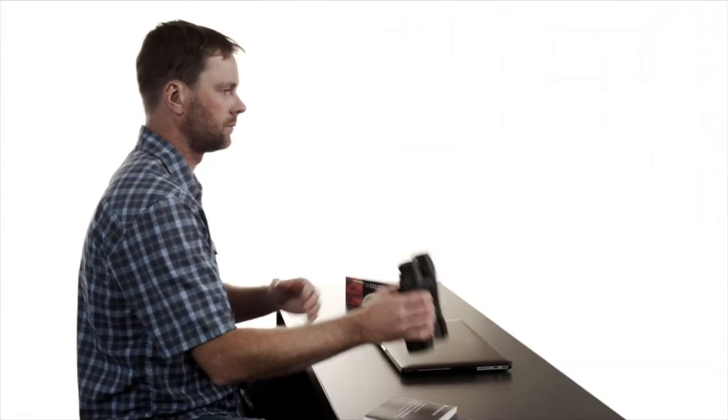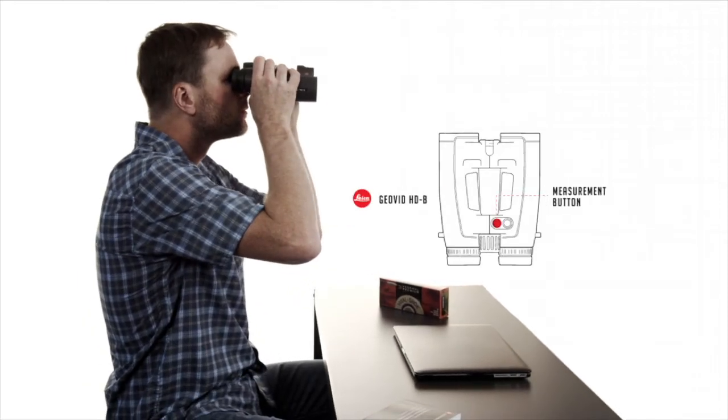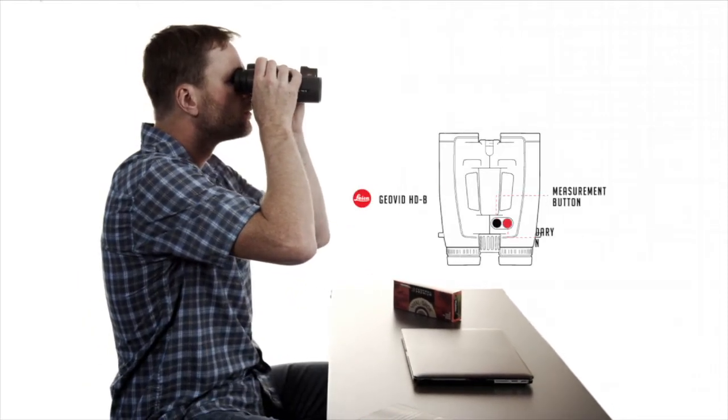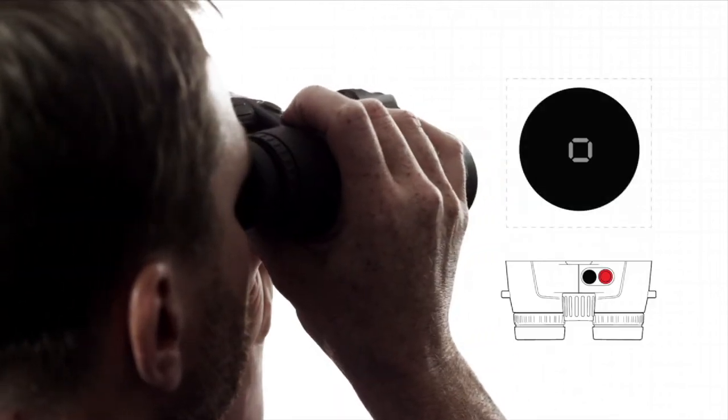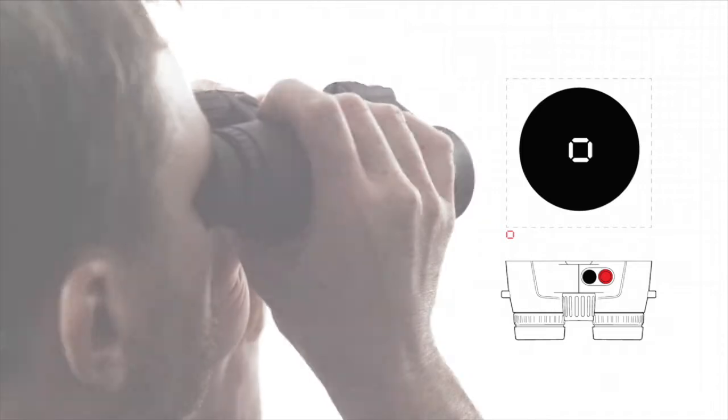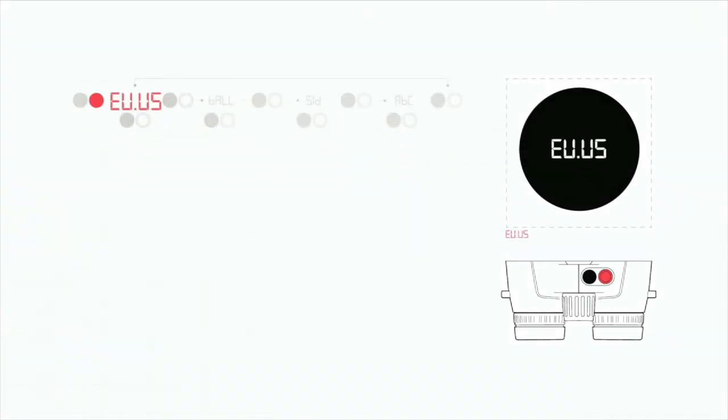Setting up the Geovid HDB is really simple. There are two buttons. The measurement button on the left and the secondary button on the right. To access the main menu, hold down the secondary button for three seconds. Press the secondary button to cycle through the four menu options. There's EU-US, the ballistics menu, the sight and distance menu, and the advanced ballistics compensation menu.